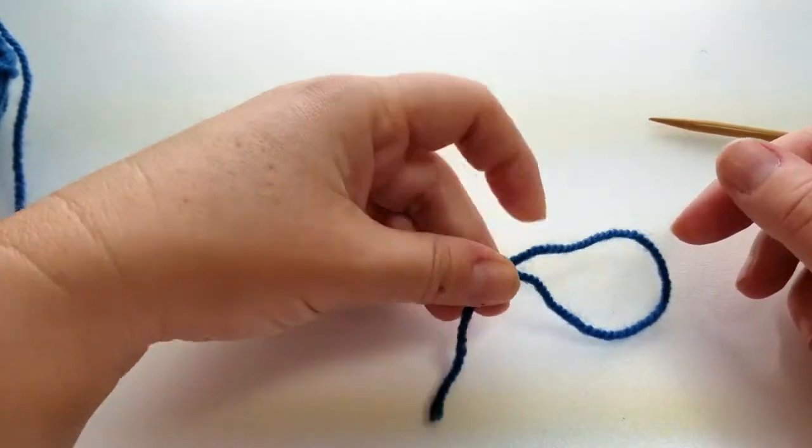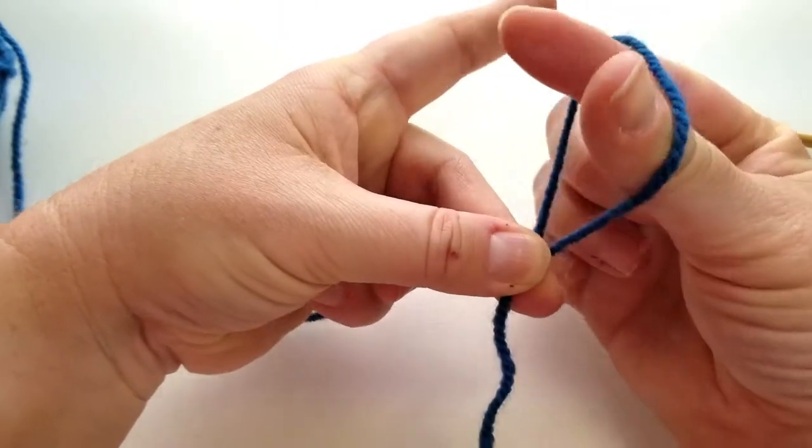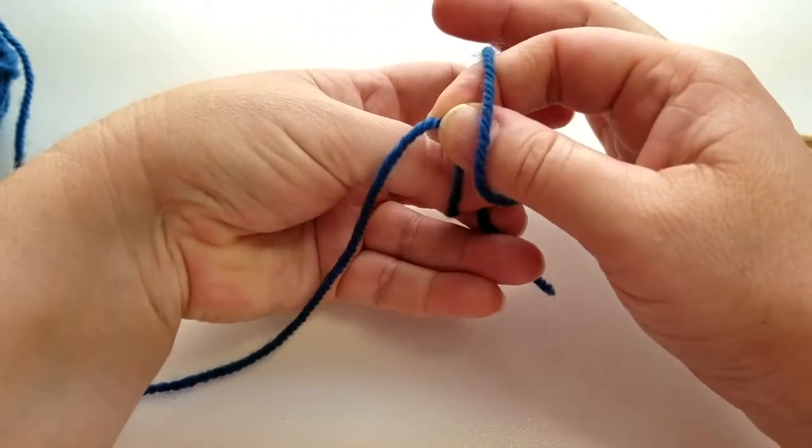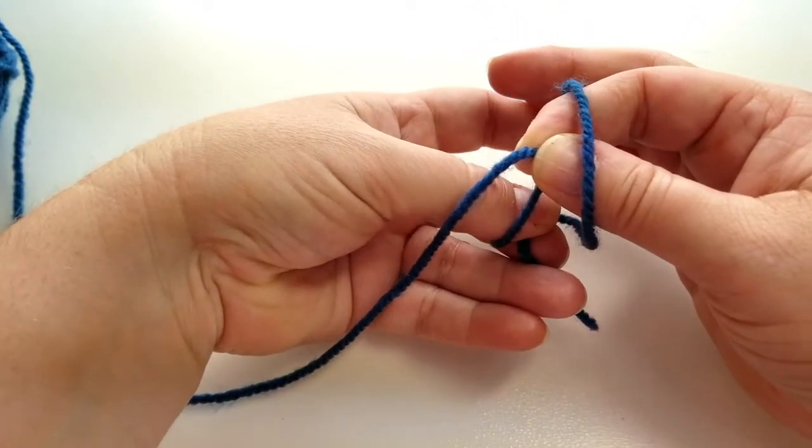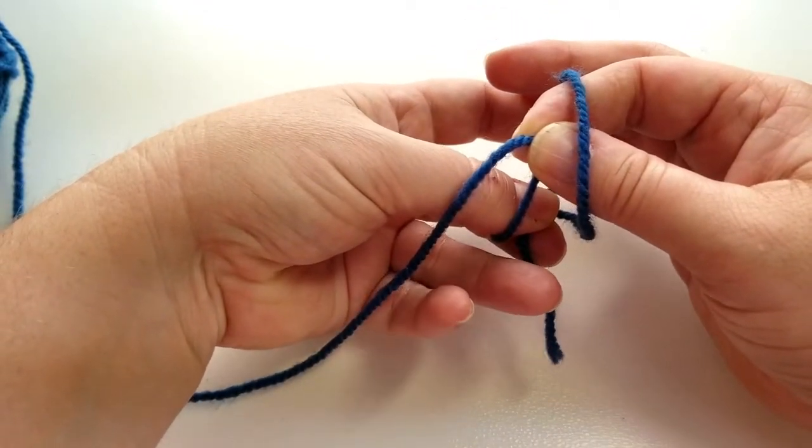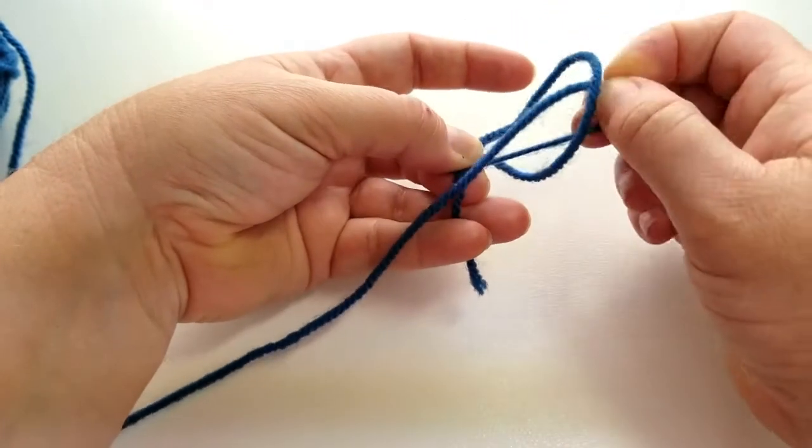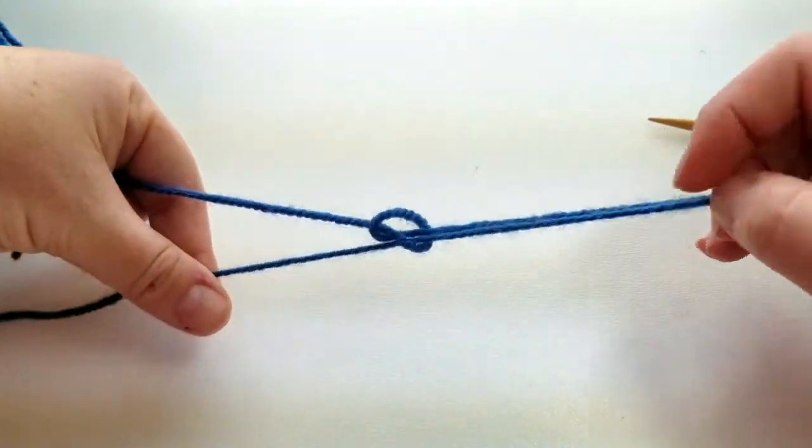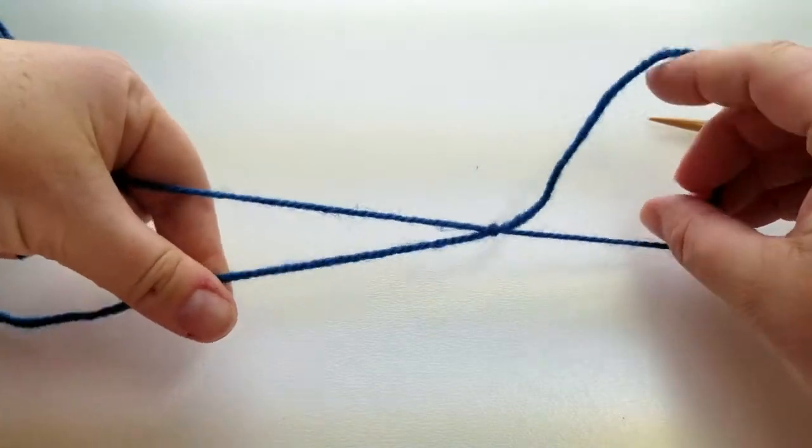And then I grab this right here and I take my thumb and my forefinger through the loop and I grab this piece of yarn. This is the one that's attached to the actual ball or skein of yarn. And I simply pull that through and then you just work it out just like that.